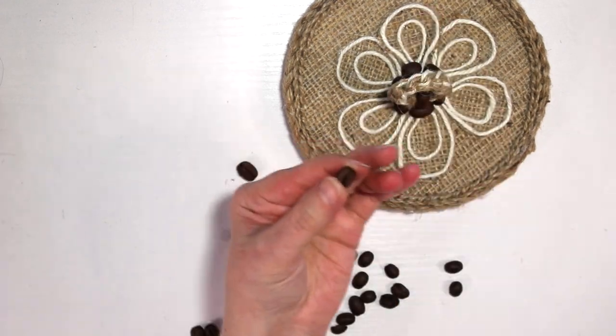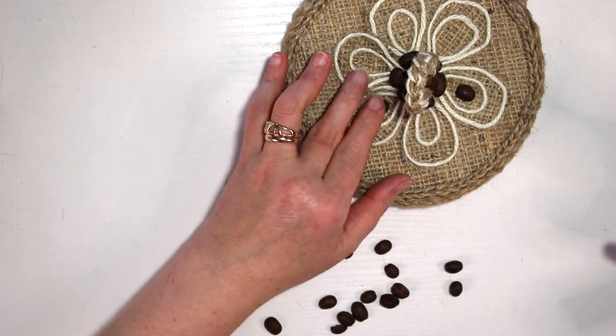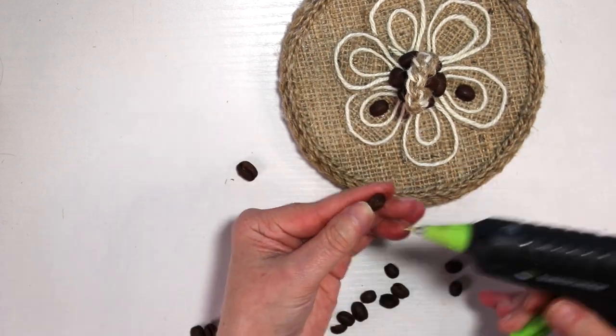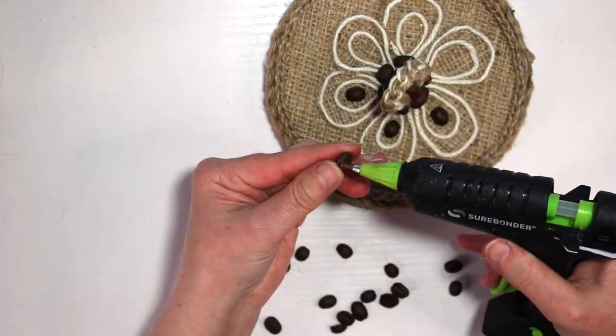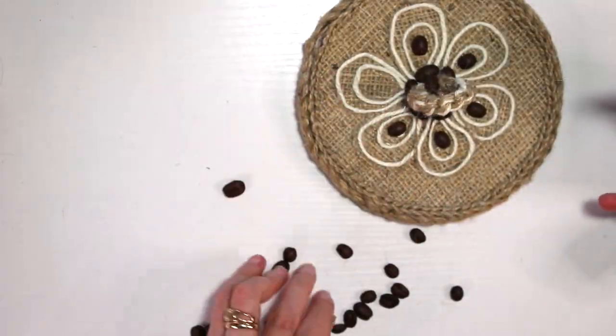And what I did, I outlined my holder. And then I put a little coffee bean inside each petal. So after that was done, I was happy how the lid looked.